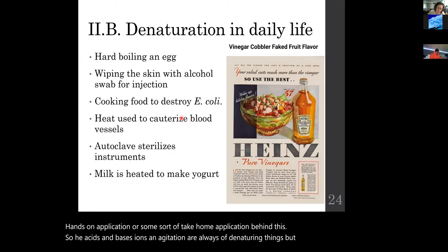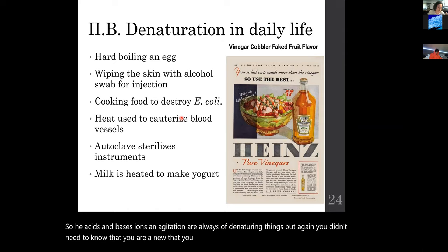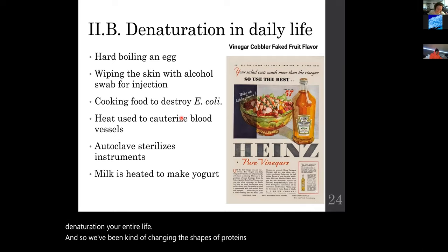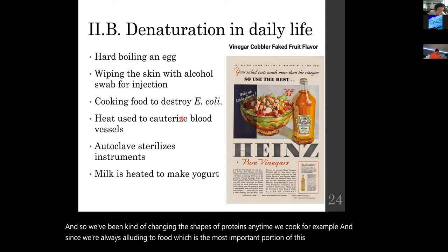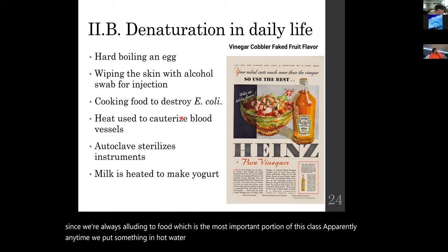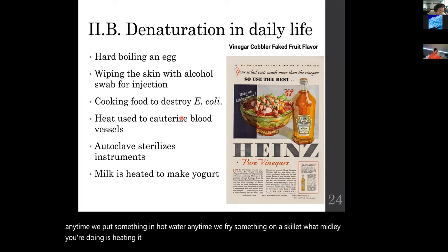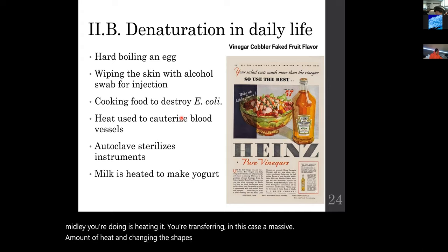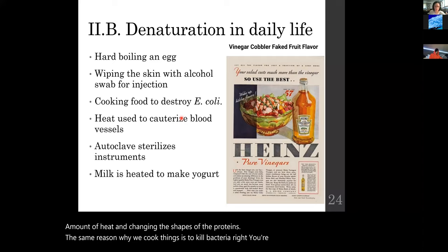You already knew this — you just didn't have a name for it. You've been practicing denaturation your entire life. Anytime we cook — putting something in hot water or frying on a skillet — you're transferring heat and changing the shapes of proteins. The same reason we cook things is to kill bacteria: you're removing their ability to stay alive by denaturing their proteins.